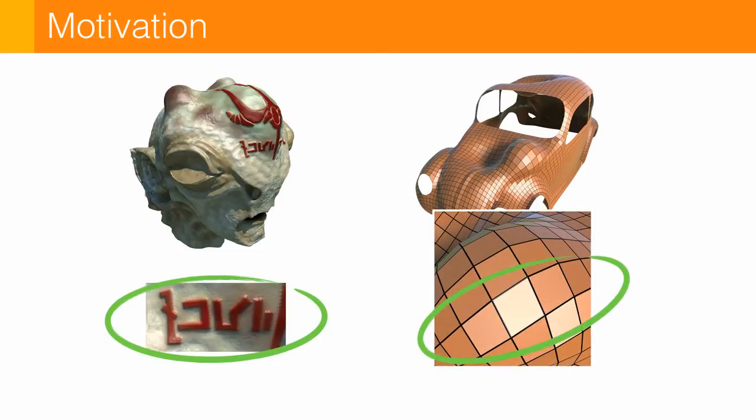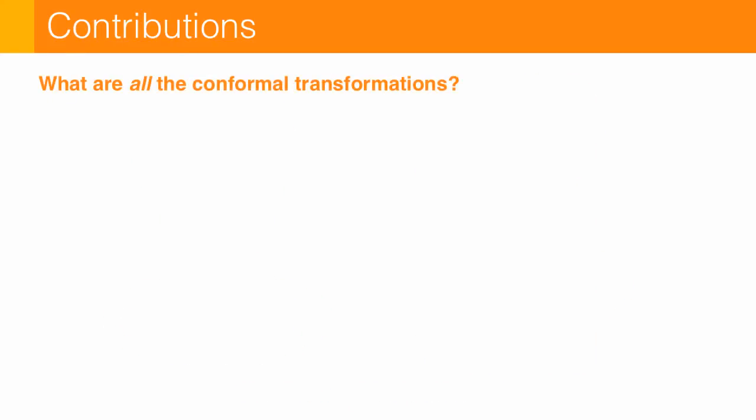And so what I'm really looking for in these two examples are transformations that preserve angles, or in other words, conformal transformations. So what we've done in this paper is answered in a pretty conclusive way the question of what are all the possible ways to transform a surface conformally.